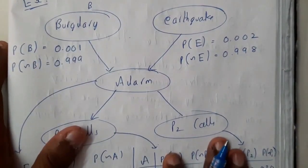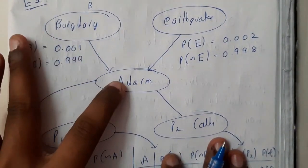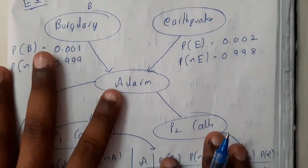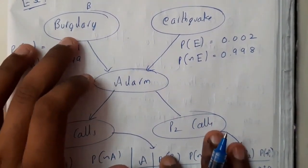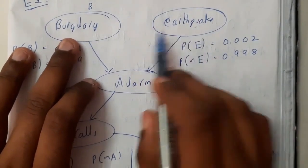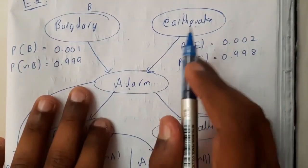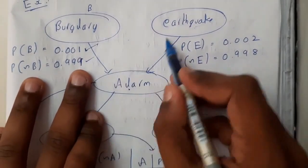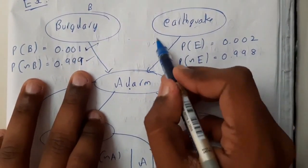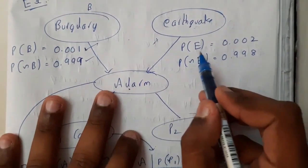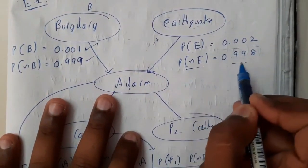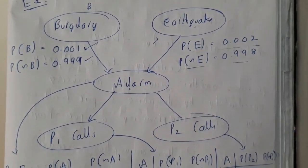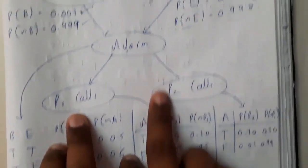Let's take another example. You're staying in a house with an alarm. You designed it so when a thief enters, it will ring. Burglary is robbery. The alarm may also ring during earthquakes. The probability of ringing during burglary is 0.001, not ringing is 0.999. For earthquake, probability of ringing is 0.002 and not ringing is 0.998. These values should be given in the question. If not given, assume random values.